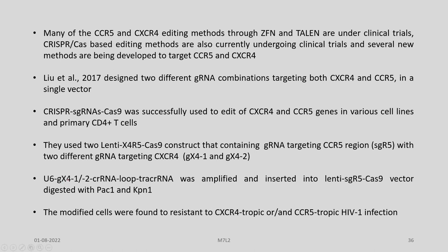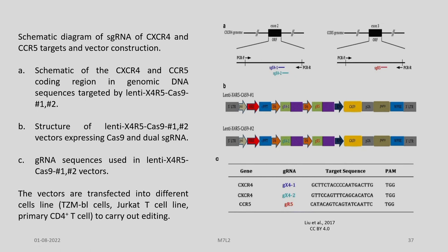Using GX4-1 and GX4-2, the CRISPR-RNA loop tracer RNA was amplified and inserted into the LentiSZR5-Cas9 vector digested with PacI and KPN1. The modified cells were found to be resistant to both CXCR4-tropic and CCR5-tropic HIV infection. You can see here the schematic diagram of the single guide RNA for CXCR4 and CCR5 targets and the vector construction.